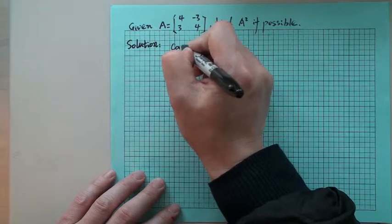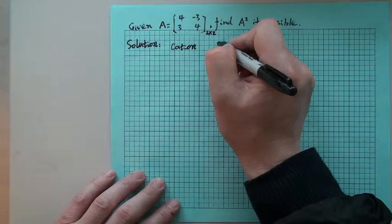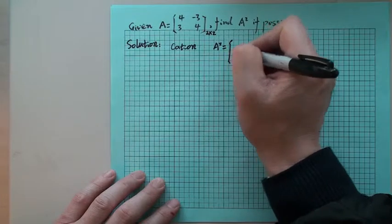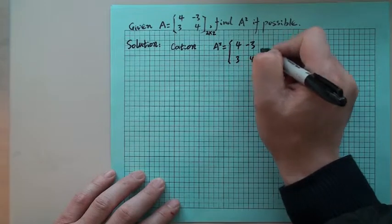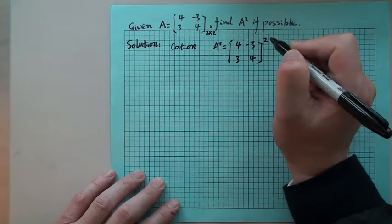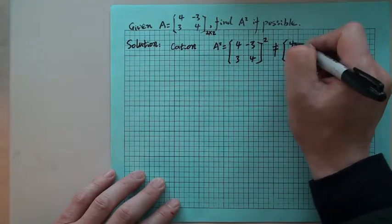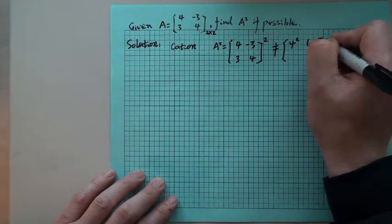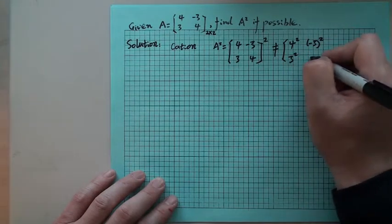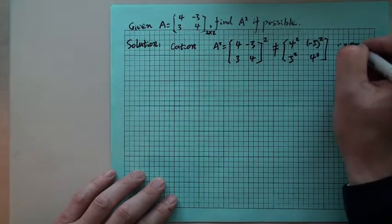First of all, we want to be cautious: A squared — you may write it like 4, negative 3, 3, 4 — that does NOT equal 4 squared, negative 3 squared, 3 squared, 4 squared. So we want to put a big NO here. You cannot simply square each element individually.